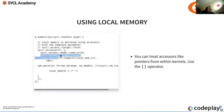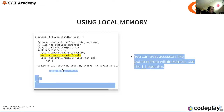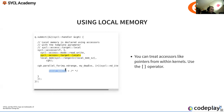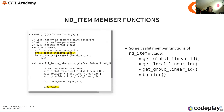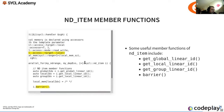The access target is local, and you can treat accessors like pointers from within kernels using the subscript operator. Local memory is declared with a particular size, the command group handler cgh is passed to the function, and then within the kernel you just use it as a normal pointer.